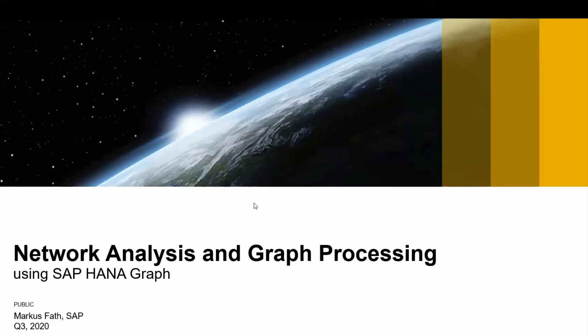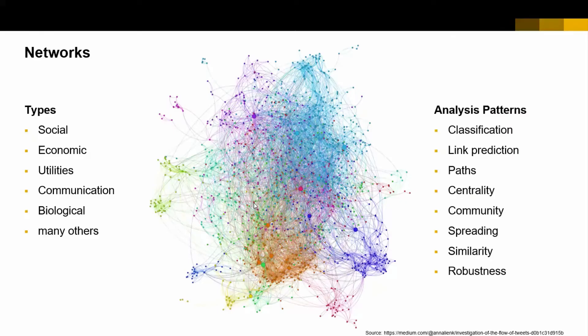So let's start off with some general ideas. Networks are all around us. We see social networks — think about Facebook and the like. Of course, there are economic networks where you have supplier relationships, where you produce stuff and sell it to your customers. There are utility networks — think about gas pipelines and things like that — and there are communication networks.